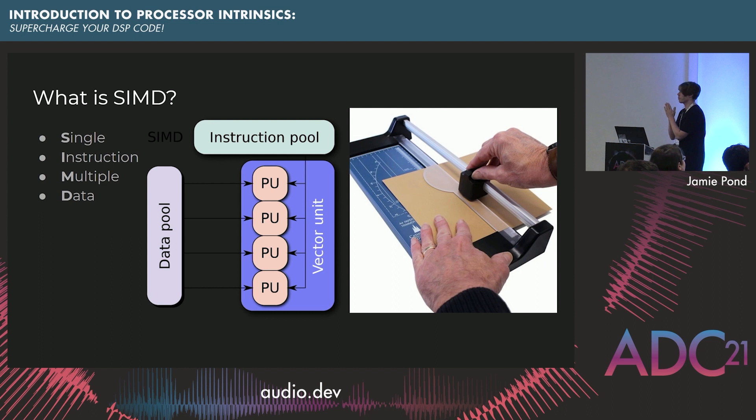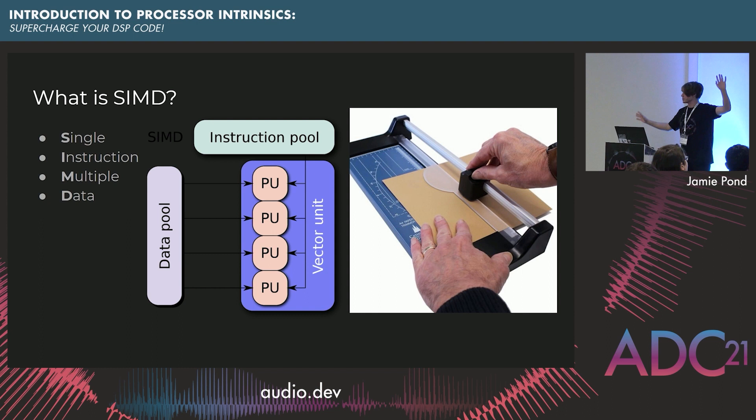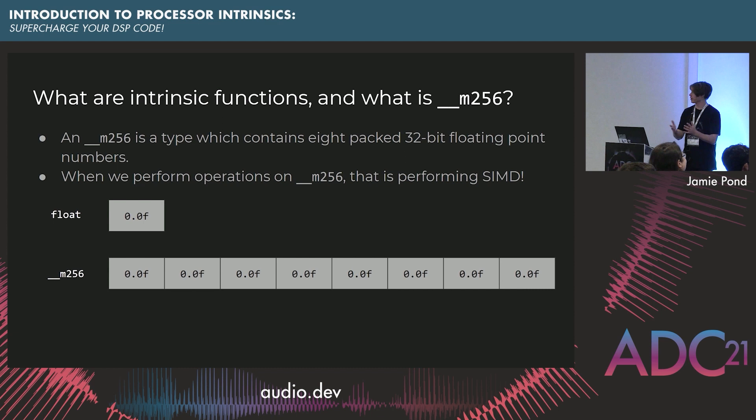So we'll briefly talk about what is SIMD. Any of you guys heard of SIMD? We want to do multiple operations simultaneously on the data. So we're going to dive into the nitty-gritty detail now. What are intrinsic functions? These are functions that your processor has that let you perform on multiple floating point numbers at once. Traditionally, you'd have an assembly instruction that says multiply one float by another single float.